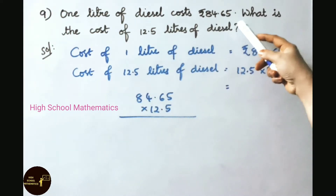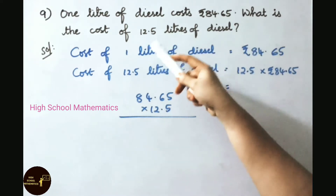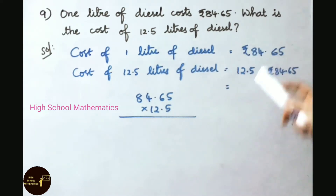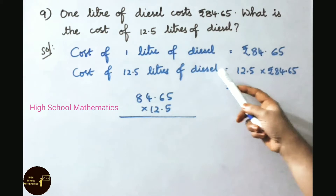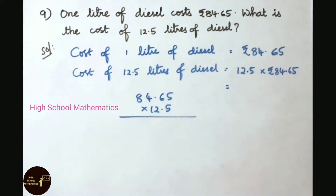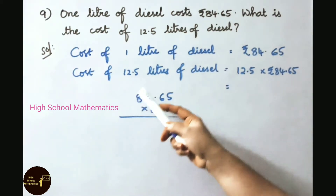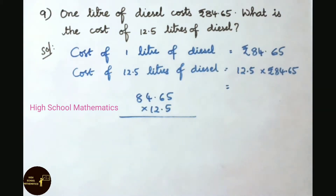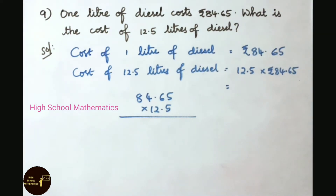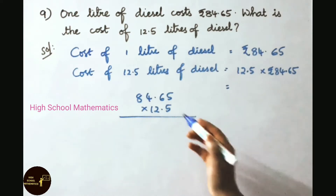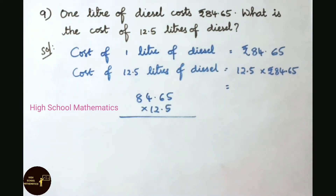Question number 9: One liter of diesel costs 84 rupees 65 paise. What is the cost of 12.5 liters of diesel? Cost of one liter of diesel is 84 rupees 65 paise. Cost of 12.5 liters equals 12.5 into 84.65 rupees. Let us do the multiplication: 84.65 multiplied by 12.5.